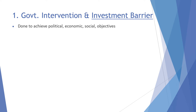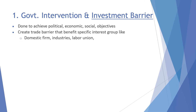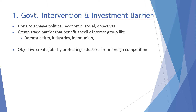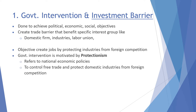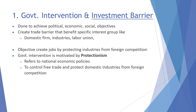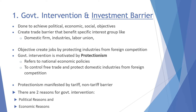Government intervention and investment barriers are done to achieve political, economic, and social objectives. It creates trade barriers that benefit specific interest groups like domestic firms, industries, and labor unions. The objective is to create jobs by protecting industries from foreign competition. Government intervention is motivated by protectionism, which refers to the national economic policy to control free trade and protect domestic industry from foreign competition. Protectionism is manifested by tariff and non-tariff barriers.